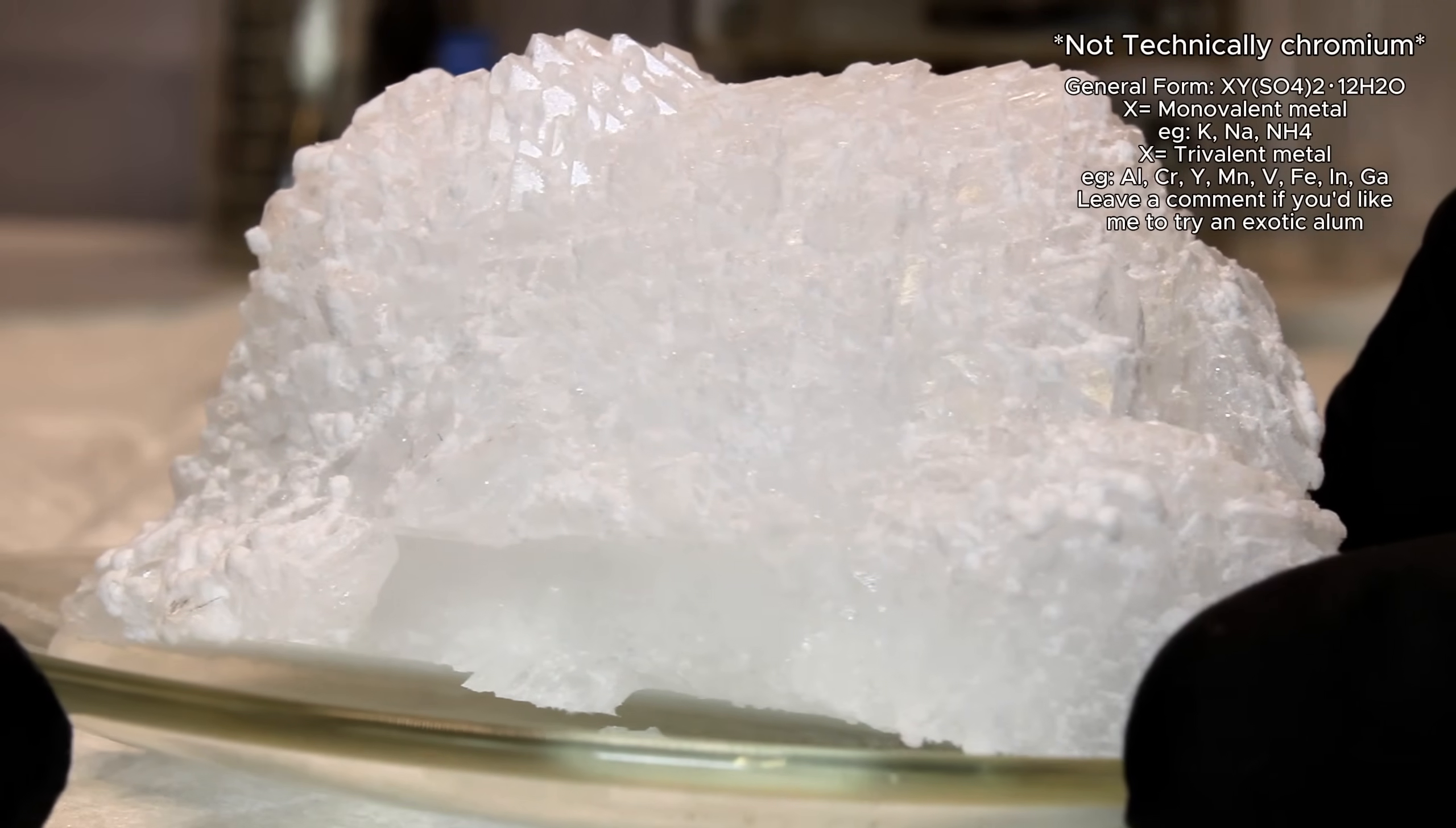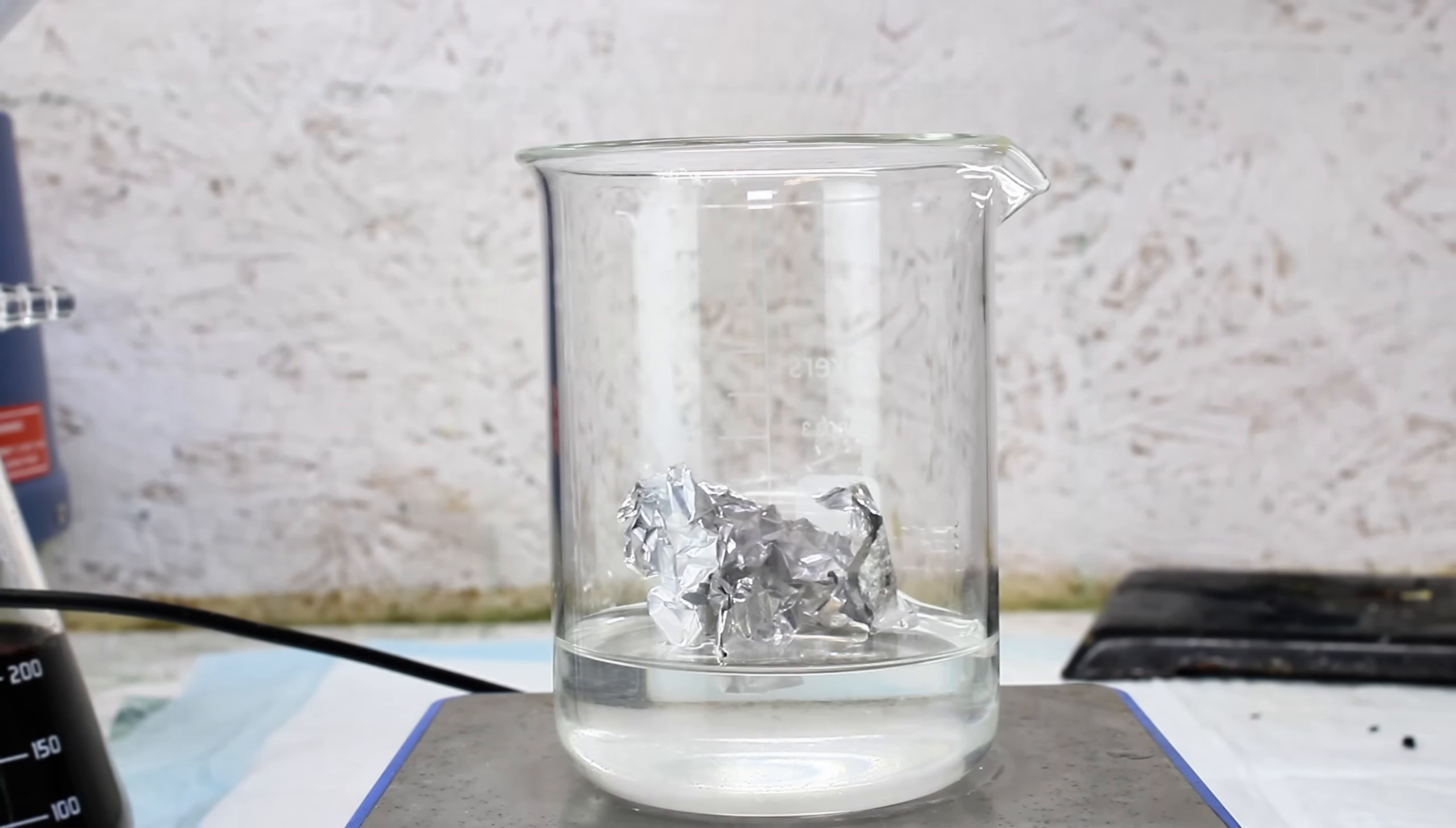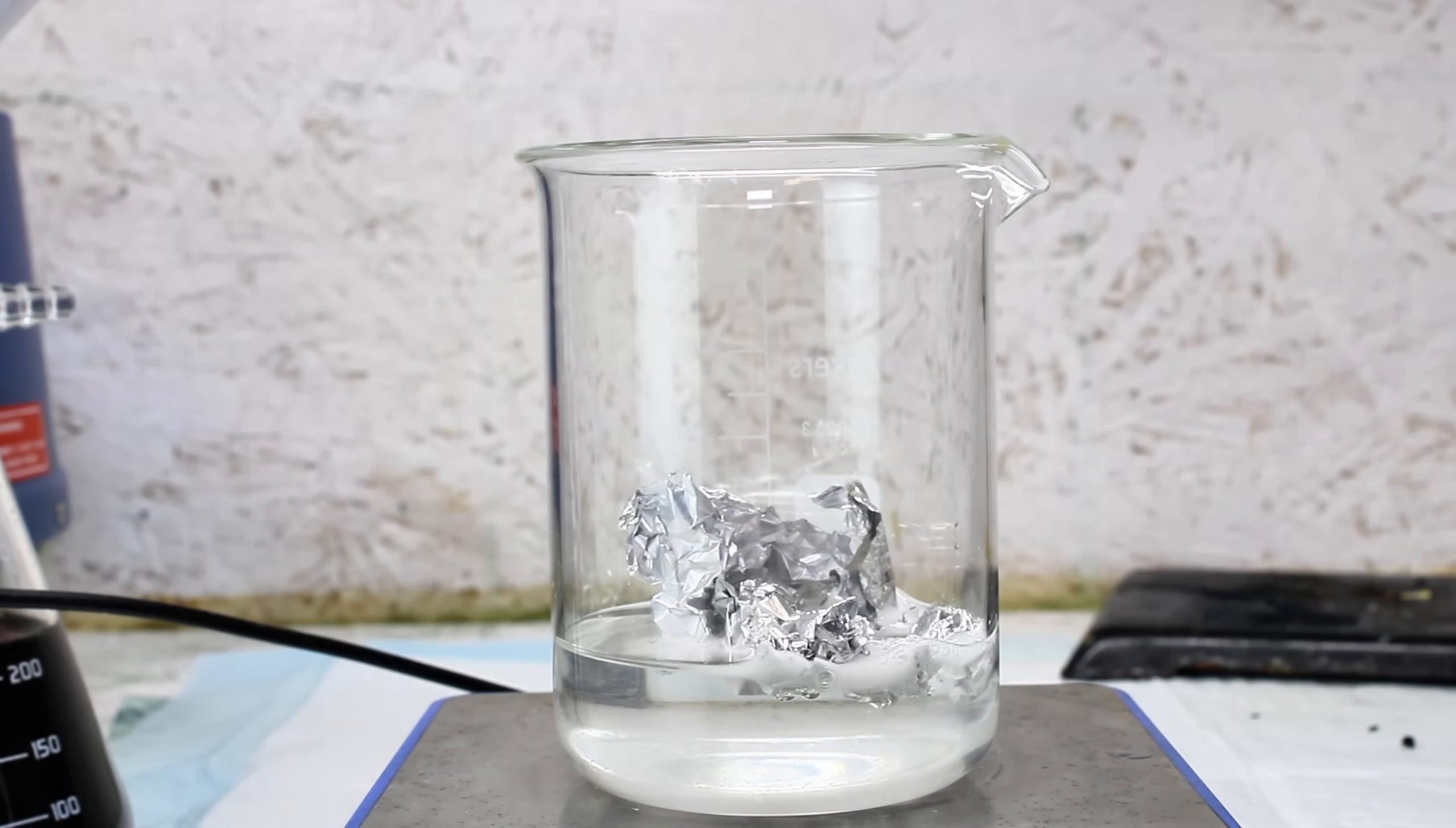Alum has an extremely long history of usage by humankind as a flocculant in cooking or water purification, and as a mordant in dyeing and leatherworking. I've used alum once before on this channel as a flocculant to precipitate cochineal red pigment, and at the time I promised I'd show how to make alum from scratch.